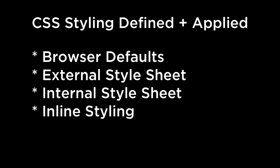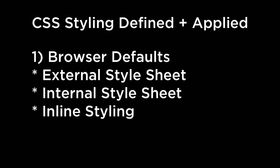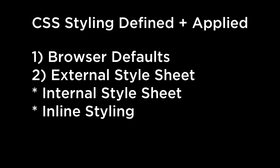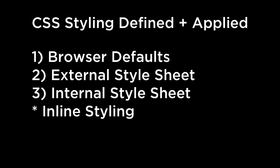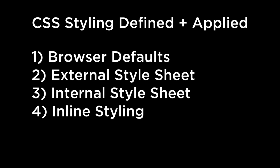Ignoring the JavaScript for now, the order of cascade in cascading style sheets is as follows: browser default, external style sheet, internal style sheet, inline style. This means that the inline style will override the internal style sheet, which will override the external style sheet, which overrides the browser defaults. Which is why and how we think of CSS as being in a cascade.